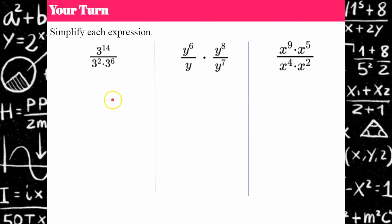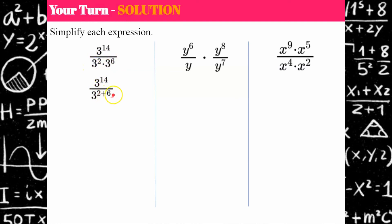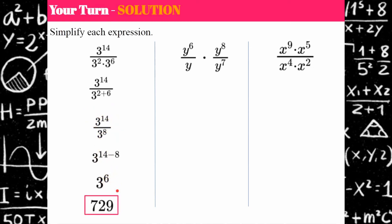Welcome back. On the first problem, I'll simplify the denominator first using the product of powers property, adding the exponents: 2 plus 6 gives me 3 to the 14th over 3 to the 8th. Now using the quotient of powers property and subtracting exponents, I get 3 to the sixth, which simplifies to 729.